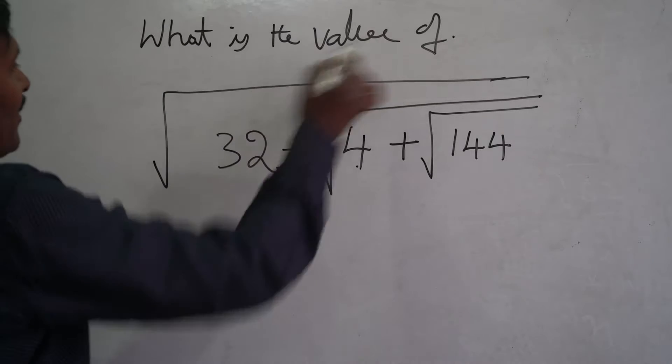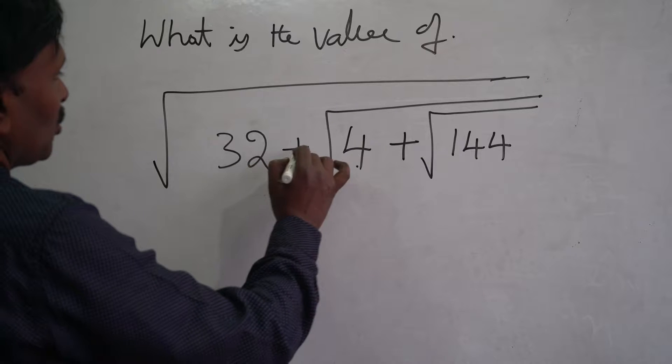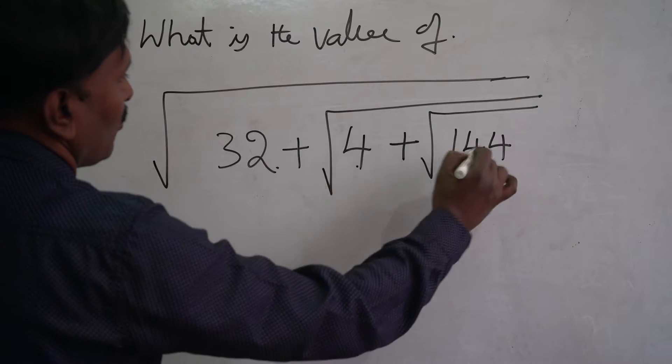Next example: what is the value of this one? See, 32 plus square root of 4 plus square root of 144.